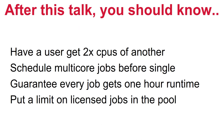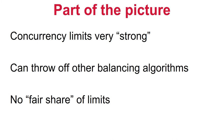Going back to our four truths and a lie: we now know that the licensed jobs limit is a truth and we know how to implement it. While concurrency limits are easy to set up, they're usually just one part of the picture. Be aware that they can throw off other balancing algorithms — if only three NFS jobs can run, user priorities and quotas may not matter much. Also, there is no fair share of limits across users; they're handed out first come, first served, so one early submitter can monopolize a limit.